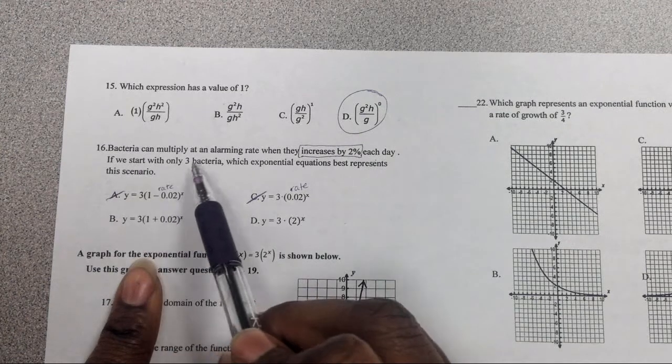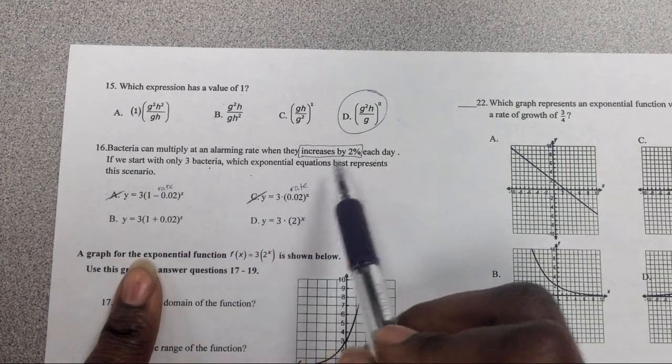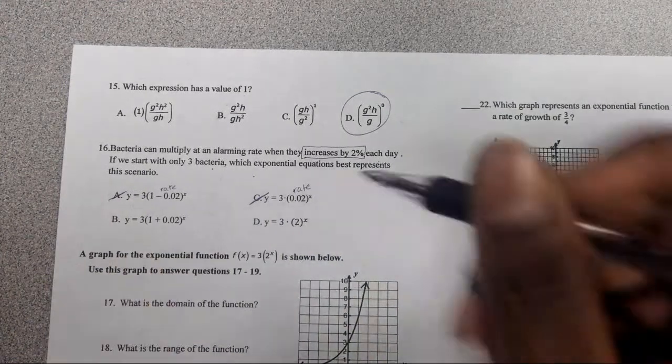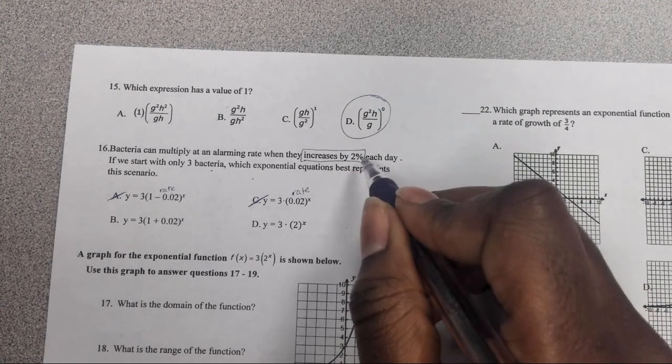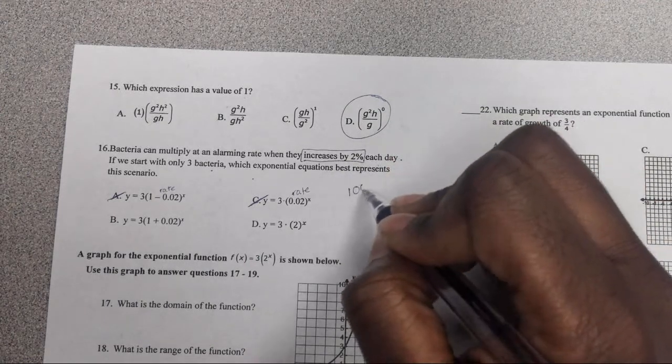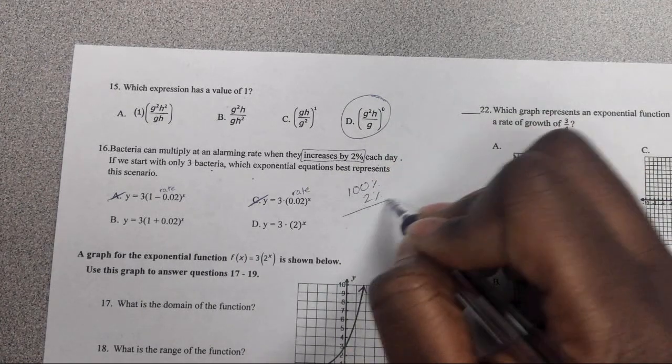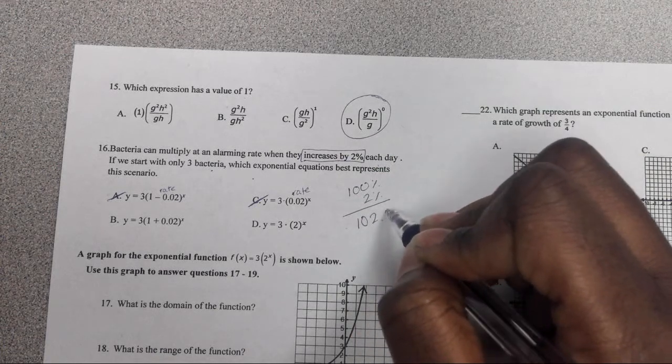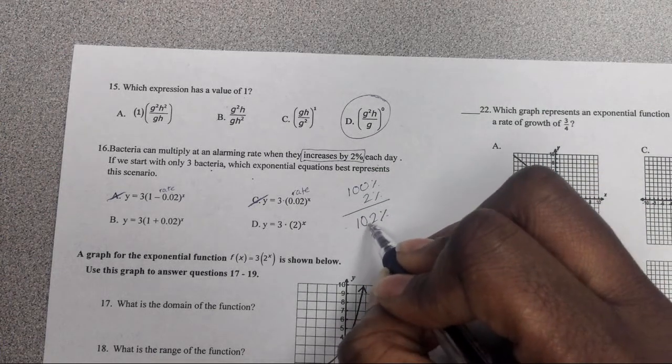It says if we start with only 3 bacteria, which exponential equation best represents the scenario. So increasing by a percentage. If it's increasing, we need to add it to the 100%, which leaves us 102%, and then we have to change it back to a decimal.